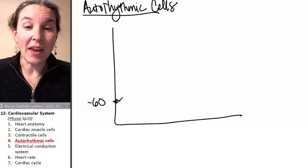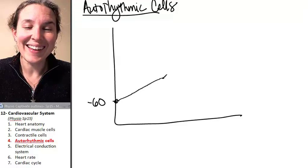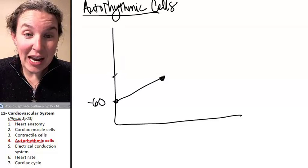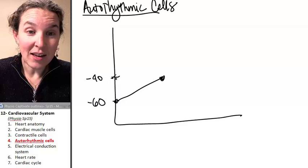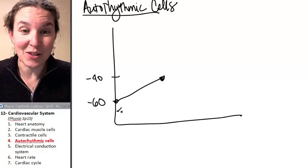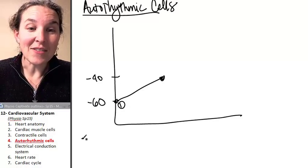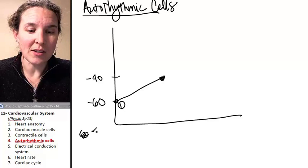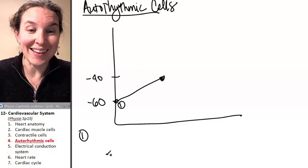And here's the thing. They have special channels. They do have threshold. Negative 40 is threshold. They have special channels.